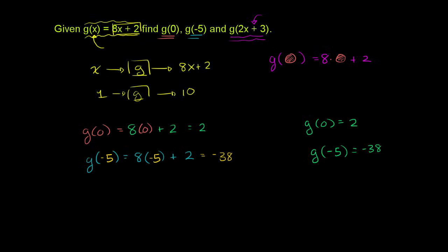So now we have g of 2x plus 3 is going to be equal to 8 times whatever we're inputting plus 2. If this was an orange, we'd put an orange here. If this is a negative 5, we'd put a negative 5 here. If this is a 0, we'd put a 0 here. In this case, we're inputting 2x plus 3 into our function, so we put 2x plus 3 where the x is.